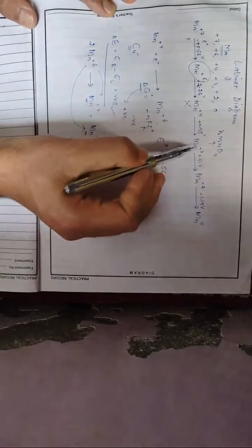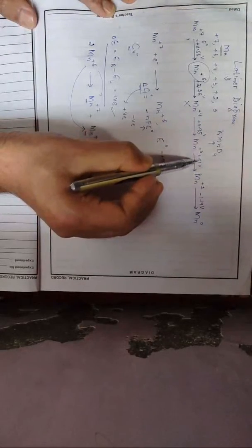For Mn⁺⁴, E_right minus E_left gives a negative value, so Mn⁺⁴ will not disproportionate. For Mn⁺³: E_right is 1.51 V and E_left is 0.95 V — this minus that comes positive, so Mn⁺³ will also undergo disproportionation. In copper, only one oxidation state underwent disproportionation. In manganese, both Mn⁺⁶ and Mn⁺³ undergo disproportionation — that is, auto-oxidation and auto-reduction simultaneously.